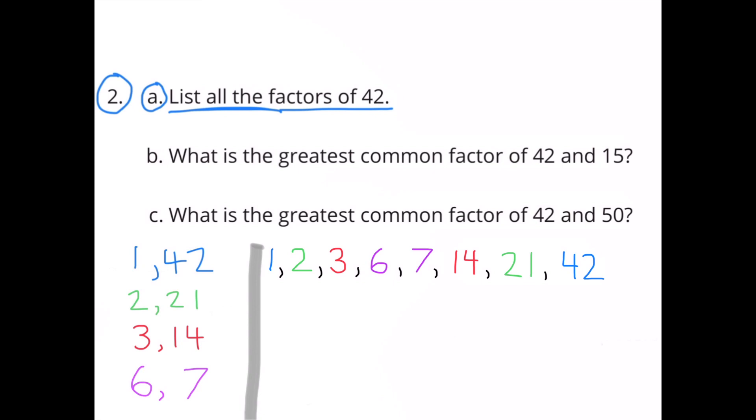In blue, you see the 1 and 42 because 1 times 42 equals 42. In green, I have 2 times 21 equals 42. In red, I have 3 times 14 equals 42. And finally in purple, I have 6 times 7 that equals 42.